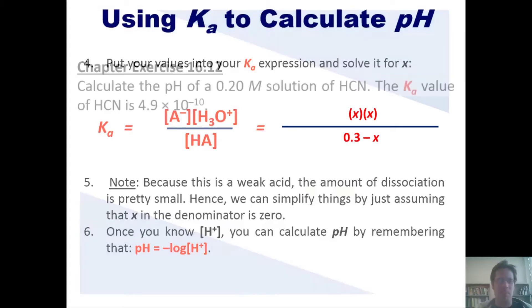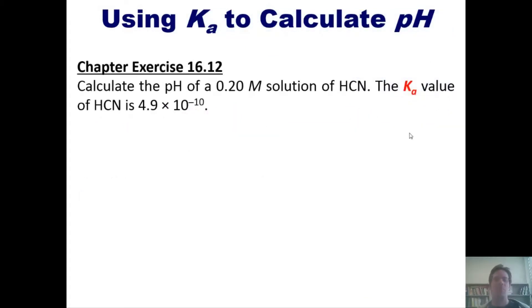Let's take a look at an example. Calculate the pH of a 0.2 molar solution of HCN. The Ka value for that acid is 4.9 times 10 to the negative 10th. Now, I invite you to follow the steps I just outlined to attempt this on your own first. Then, if you wish, you can click a link here to a separate video in which I'll show you how to do it on the board.